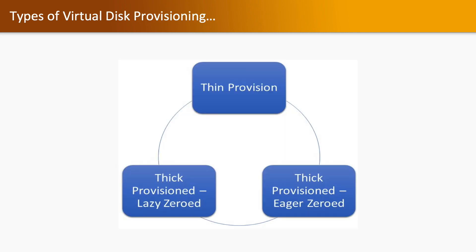We have basically two types of virtual disk provisioning: thin provisioning and thick provisioning. In thick provisioning, we have two sub-types: lazy zeroed and eager zeroed.